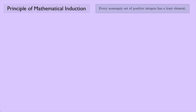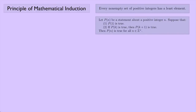Here's the well-ordering principle and here's the principle of mathematical induction. Let's try and sketch out a proof. The well-ordering principle talks about a non-empty set, so if I'm going to use it, I probably need to have some kind of a set. So what kind of set could I use?